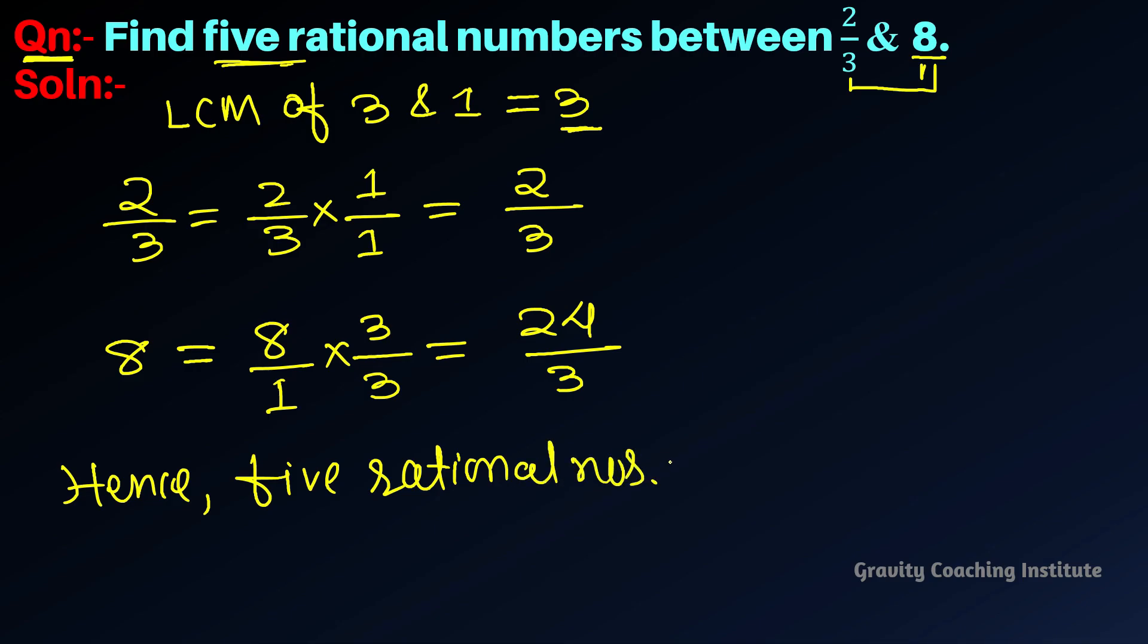Five rational numbers between 2 upon 3 and 8 are 3 upon 3, 4 upon 3, 5 upon 3, 6 upon 3, 7 upon 3. Answer.